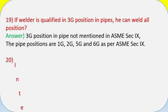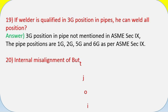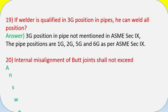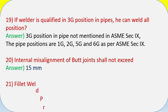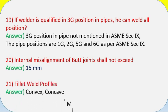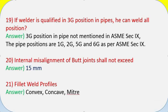Question 20: Internal misalignment of butt joints shall not exceed? Answer: 1.5 millimeters. Question 21: Fillet weld profiles? Answer: Convex, Concave, and Mitre.